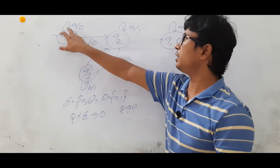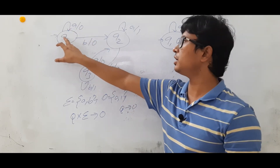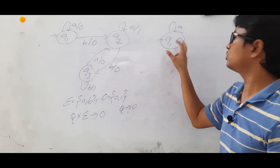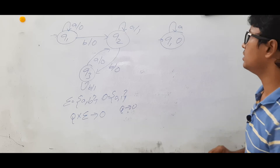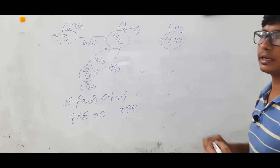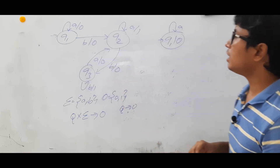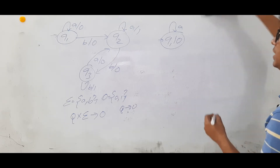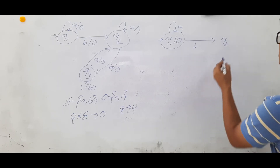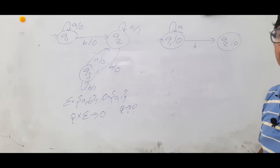Q1 on A it is generating output 0. When it comes to a Moore machine, you should give the output in the state itself. So Q1 on A it should give the output as 0 — I represent it as 0. Q1 is generating the output as 0. Now Q1 on B is going to a state called Q2 which is generating output as 0.